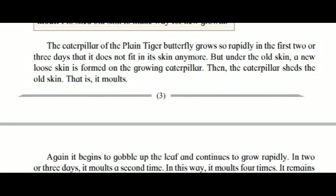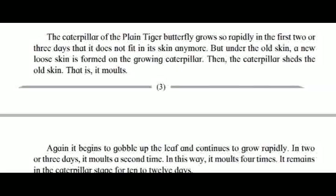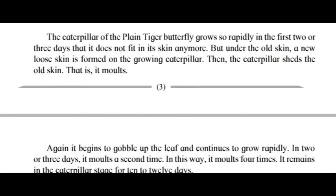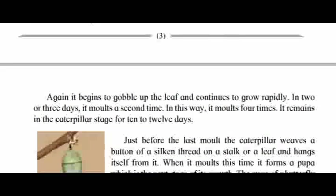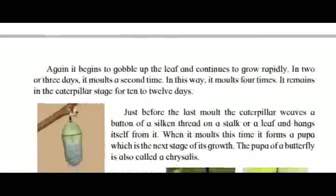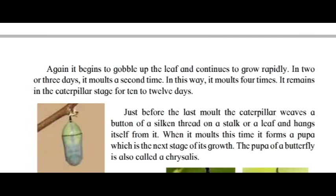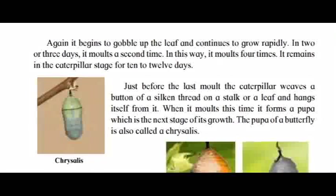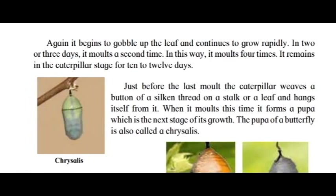The caterpillar of the plain tiger butterfly grows so rapidly in the first two or three days that it does not fit in its skin anymore. Under the old skin, a new loose skin is formed on the growing caterpillar. Then the caterpillar sheds the old skin — that is, it molts. It begins to gobble up the leaf and continues to grow rapidly. In two or three days it molts a second time. In this way it molts four times, remaining in the caterpillar stage for 10 to 12 days.